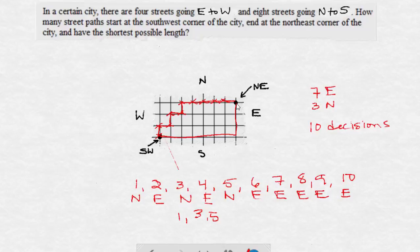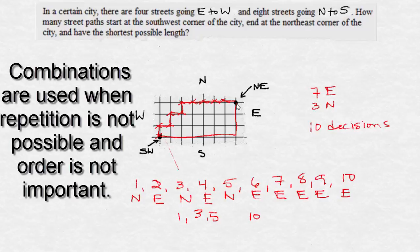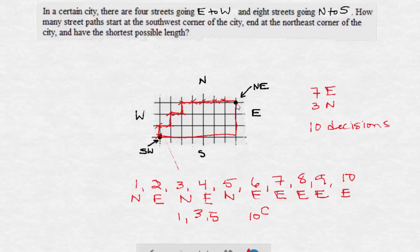We are choosing from ten different street corners or ten different decisions and we're choosing three of them to be going to the north, which is equal to ten factorial over three factorial times ten minus three or seven factorial. This is equal to 120 different ways that I can accomplish this task, or in other words, 120 paths through the city that are the shortest way to get from the southwest corner to the northeast corner.